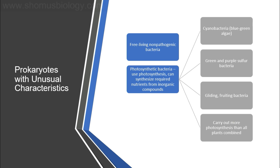The unusual characteristics of prokaryotes are listed in this slide. Some are free-living, non-pathogenic bacteria that don't harm us — they live their own life. There are also photosynthetic bacteria that use photosynthesis to synthesize required nutrients from inorganic compounds. Free-living bacteria can make their own energy source, while pathogenic ones can make us sick.